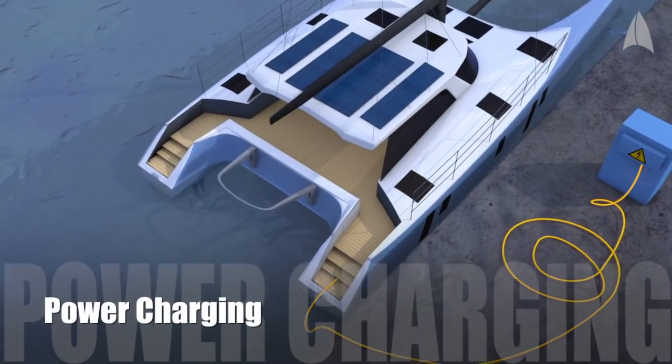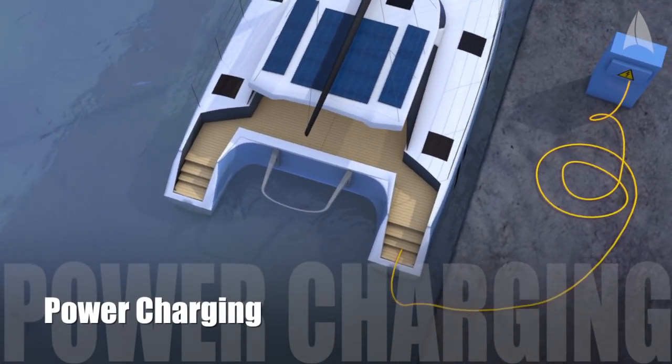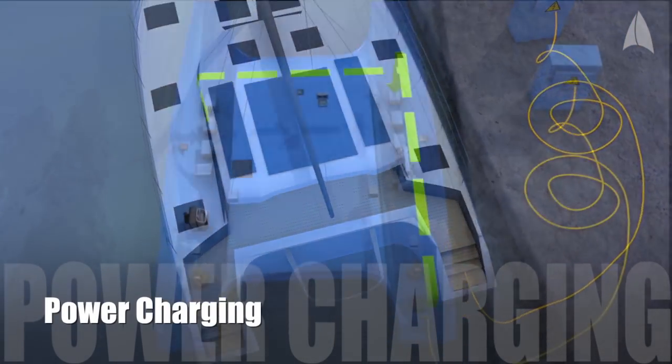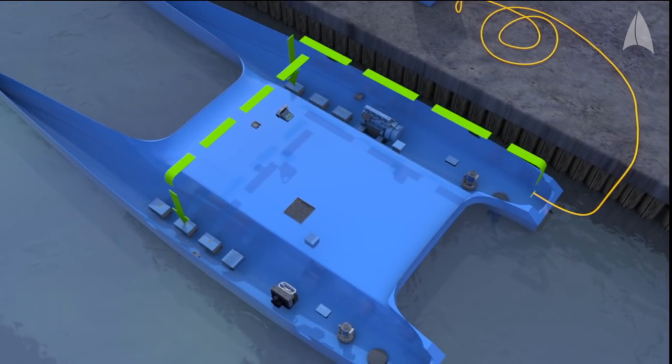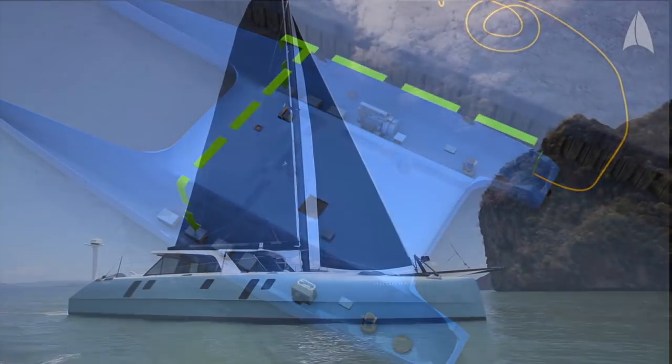While docked in a marina, the batteries can be charged with shore power. House loads larger than the shore power capacity can be used because the battery pack will provide peak power during times of higher demand such as cooking.